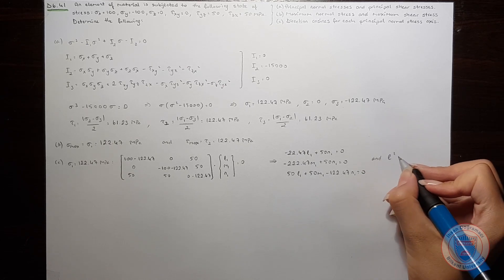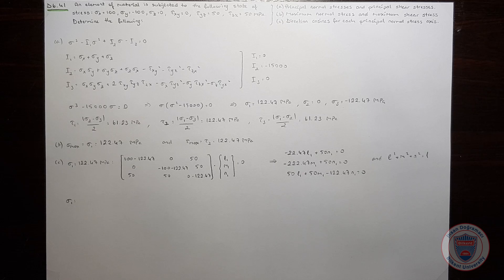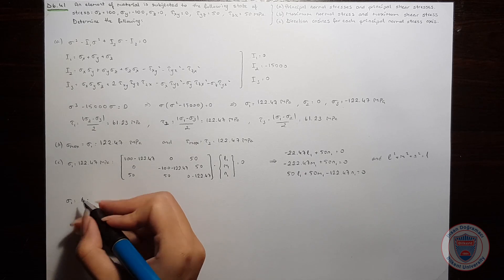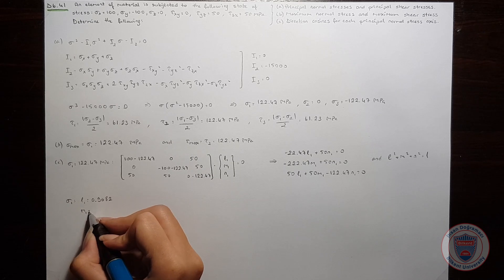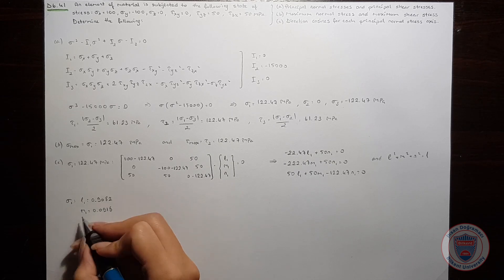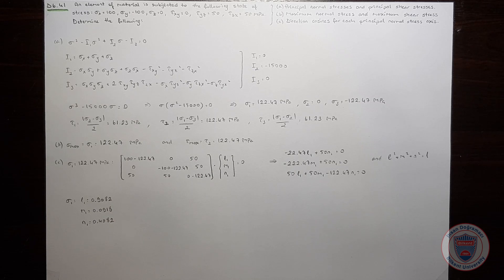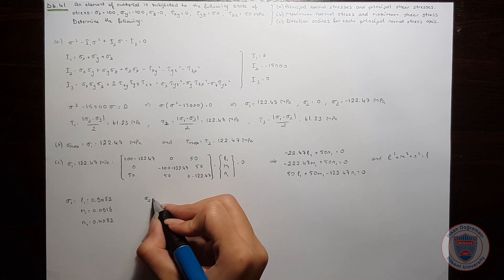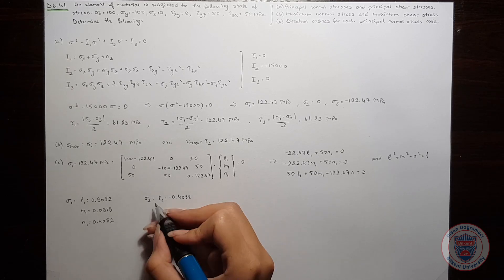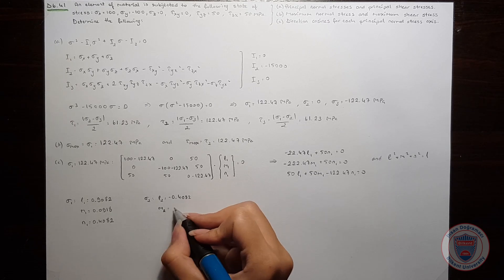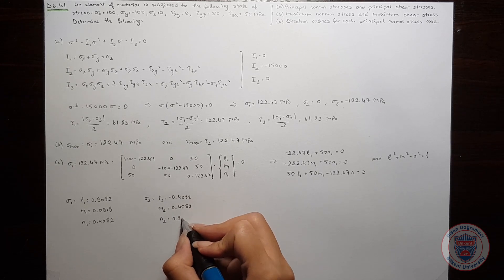We also know that L squared plus M squared plus N squared must equal 1. For sigma_1, we obtain L1 equal to 0.982, M1 equal to 0.0918, and N1 equal to 0.482. Following the same procedure for sigma_2: L2 equals minus 0.482, M2 equals 0.482, and N2 equals minus 0.8165.